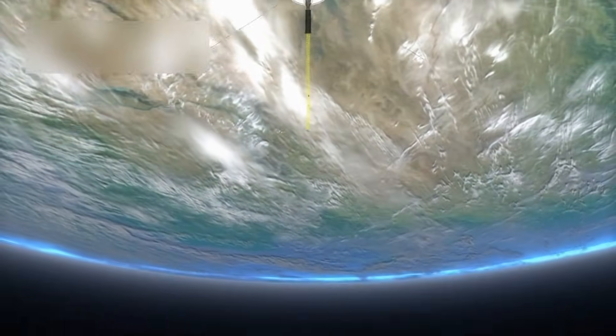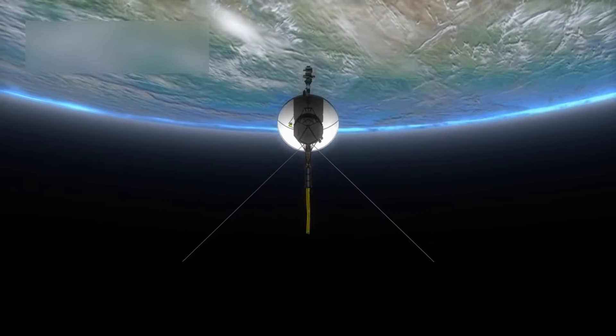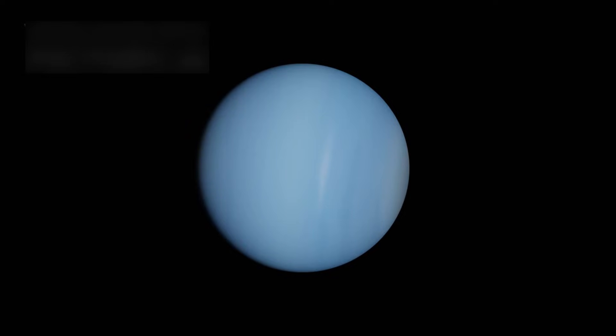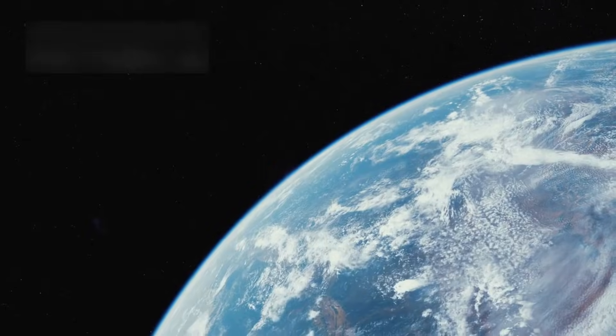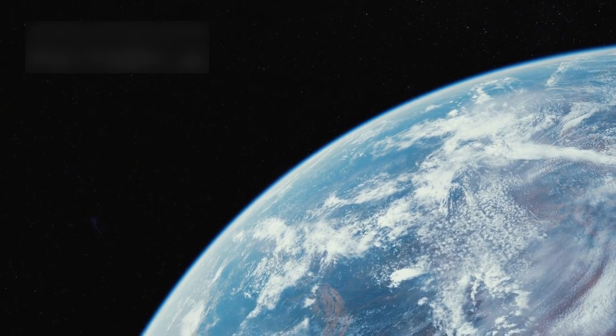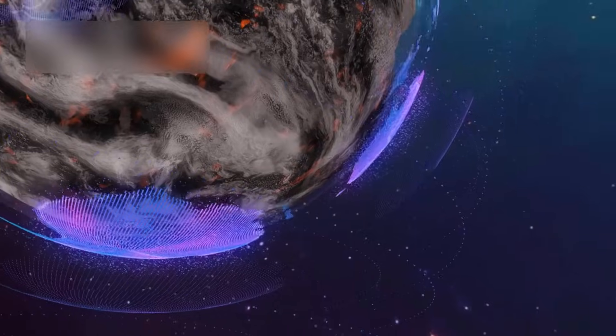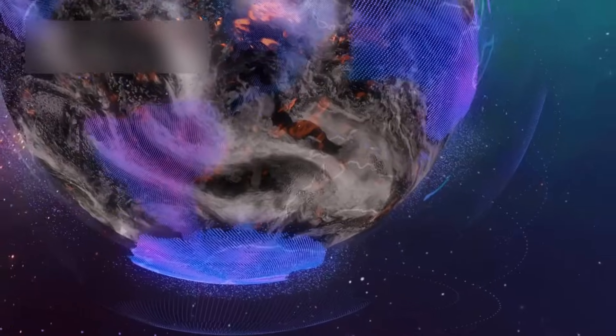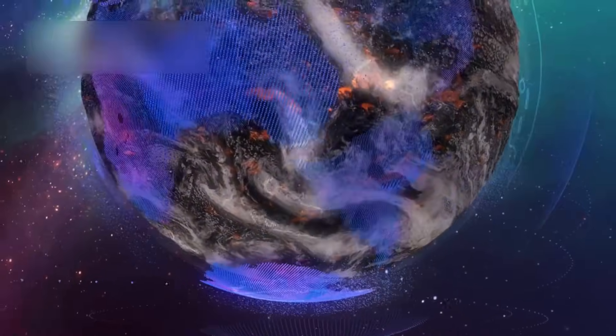The mission has already answered many questions but has raised even more. From uncovering volcanoes on Io to taking the famous pale blue dot photo of Earth, Voyager 1 has changed how we see ourselves. That small dot in space is our home, seen from billions of miles away. It's a powerful reminder of our place in the cosmos and how tiny we are in the vastness of space.